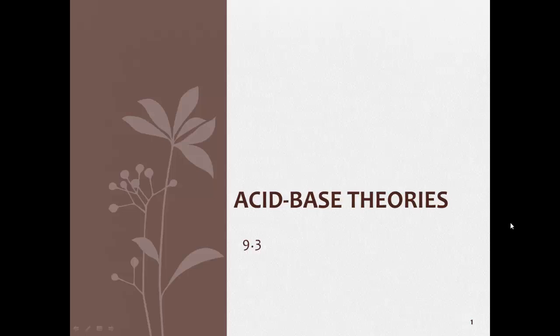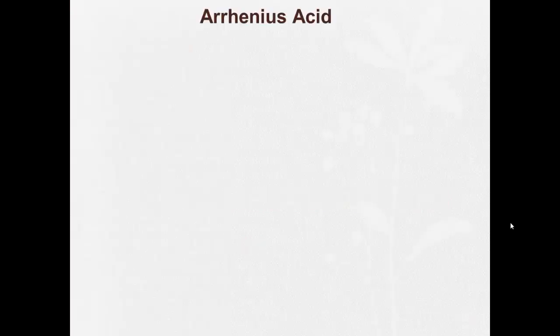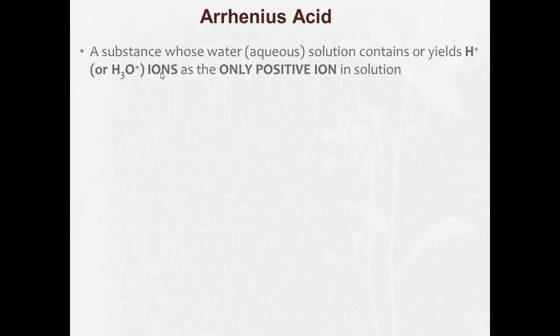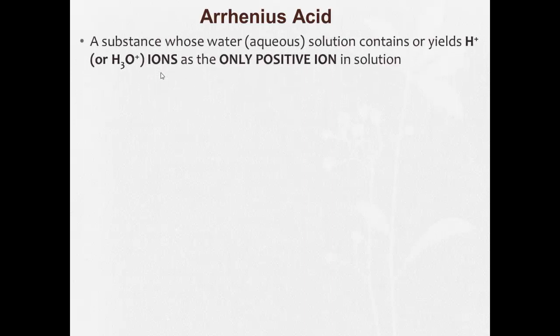9.3 acid-base theories. This is going to be the one with the most memorization for this unit. The first acid-base theory is what's called an Arrhenius acid or base. So first we're going to talk about an Arrhenius acid. Definition is a substance whose water, aqueous solution, contains or yields H plus or H3O plus ions as the only positive ions in solution.